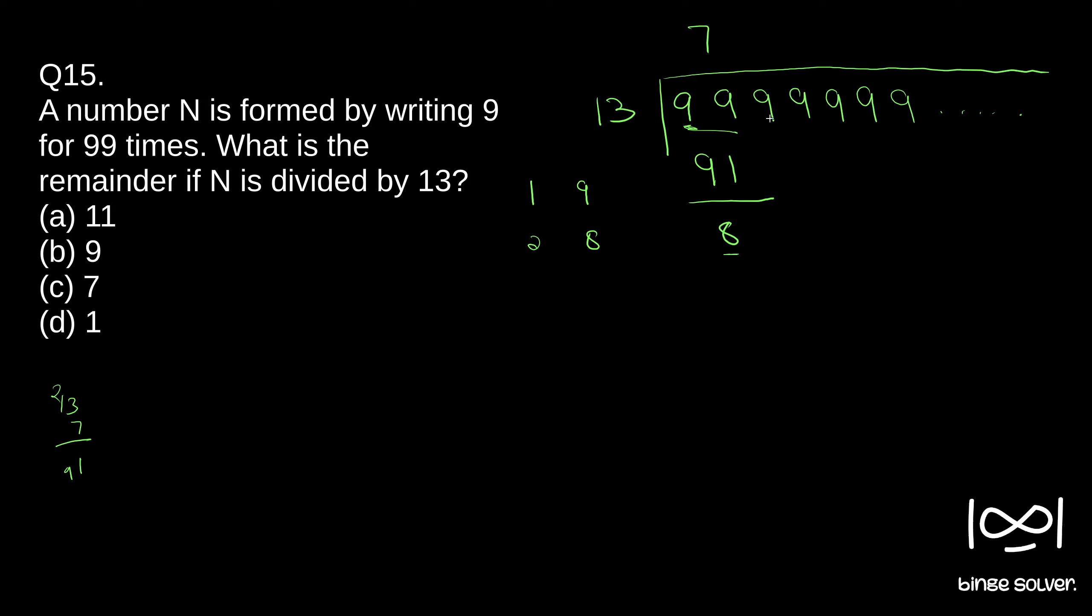So we have 89. 13 into six, six into three is 18, six, 78. So we'll have six here and 78. We have 11 as our remainder. In case we had three nines, we will get 11 as our remainder.